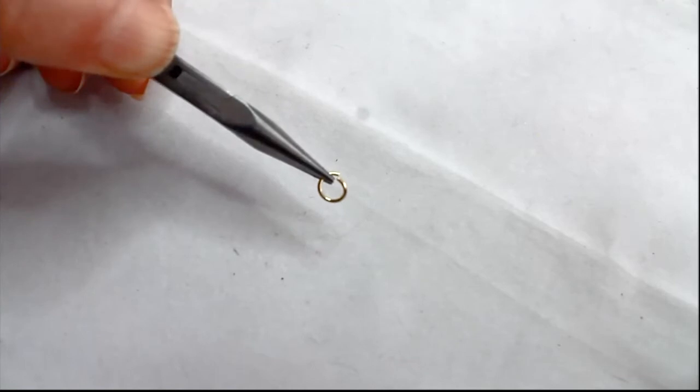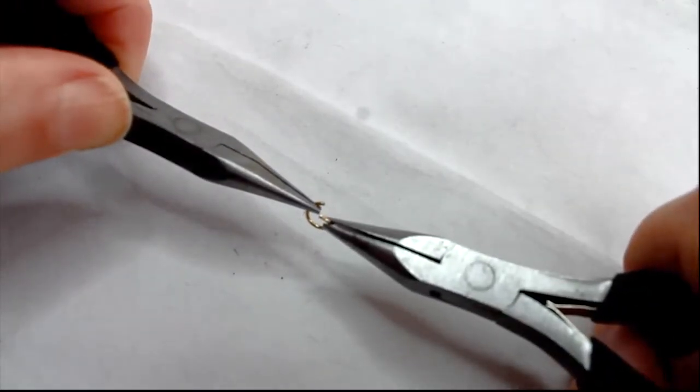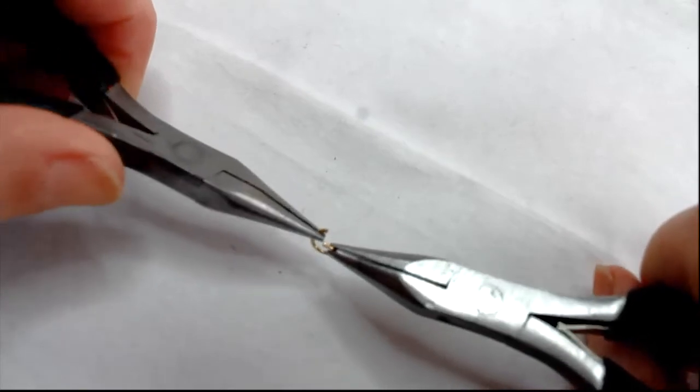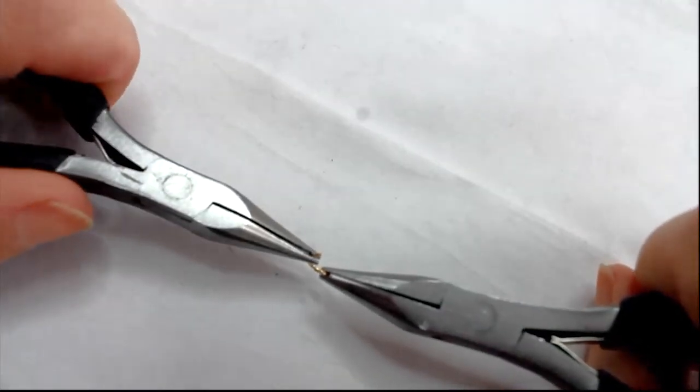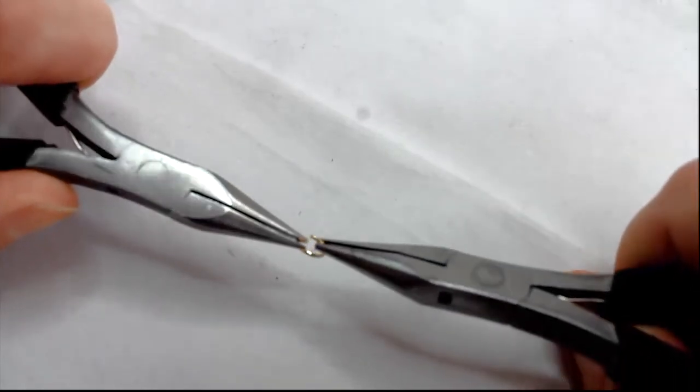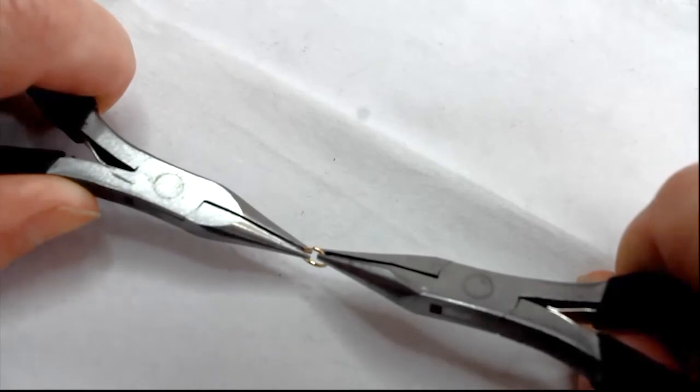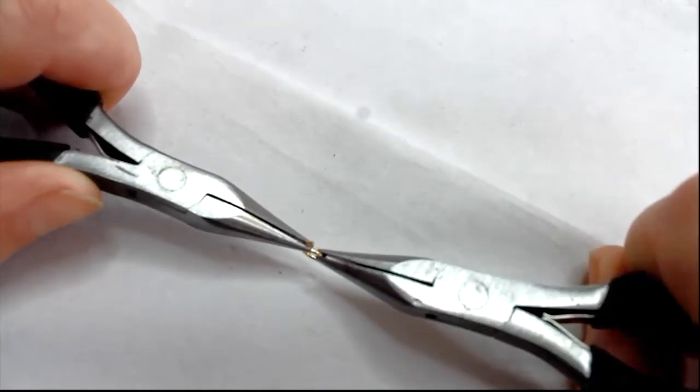To close the jump ring, we do exactly the opposite. Bring the two parts back towards the centre, pushing in slightly as they come towards the middle and then go past centre. Come back towards centre, still pushing inwards. And do it again.